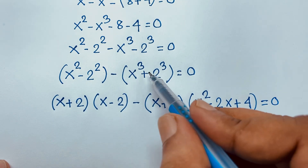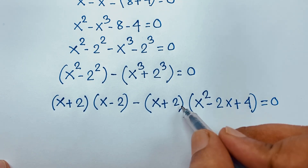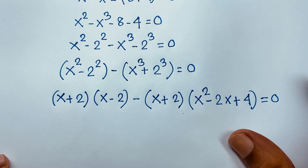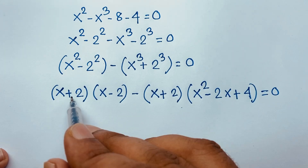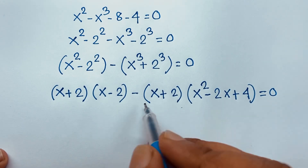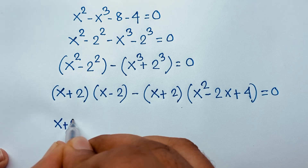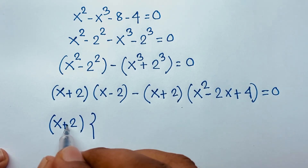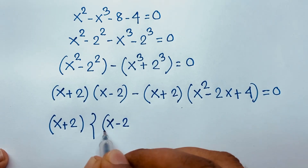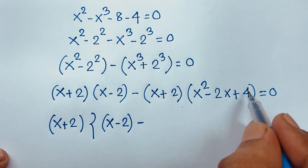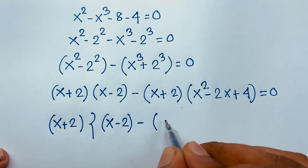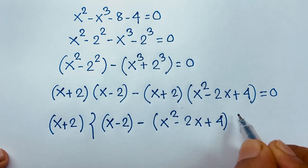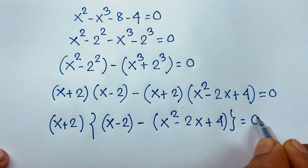I apply the formula a cubed plus b cubed equals a plus b times a squared minus ab plus b squared. Now here x plus 2 is common. If I take x plus 2 as common, dividing through gives x minus 2. And dividing the second part gives x squared minus 2x plus 4, equal to 0.